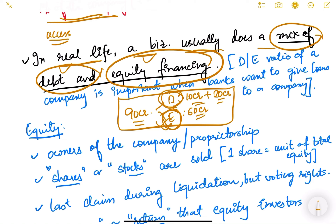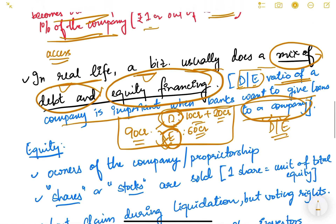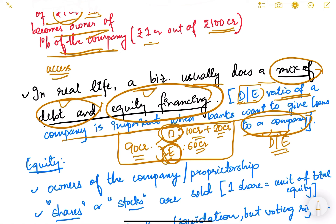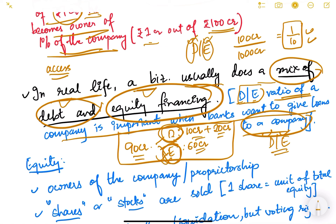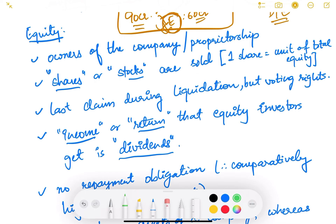Debt financing may be more easily accessible — a company can approach a bank, show assets as collateral, and get a loan. The ratio of total debt to total equity of a company is known as the D/E ratio — the debt-to-equity ratio. This ratio is important when banks consider giving loans. For example, if Amazon approaches SBI, the bank will look at its financial statements and check the D/E ratio to assess how much debt the company has already taken.